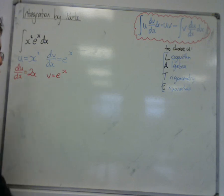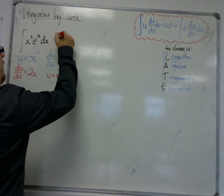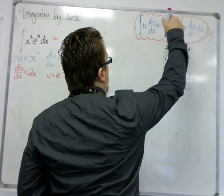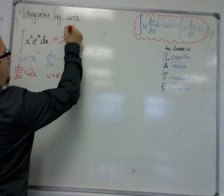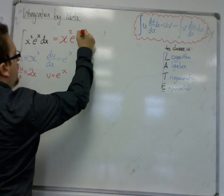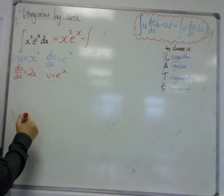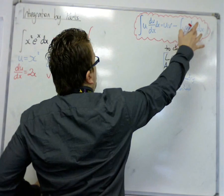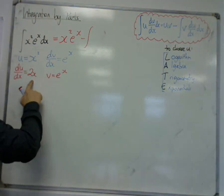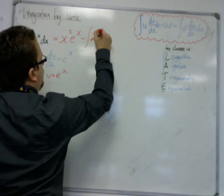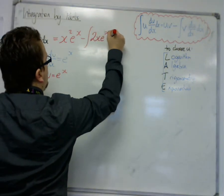So we can immediately put it straight into the formula, so that we have the u times v, so that's x squared e to the x. Let's take away the integral of v times du by dx, so that's 2x e to the x, 2x e to the x dx.